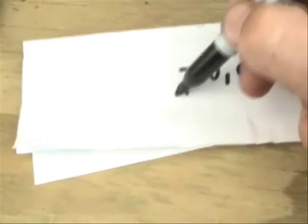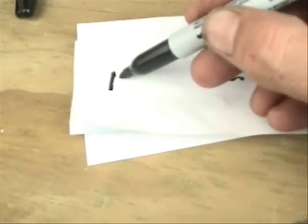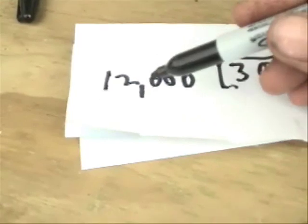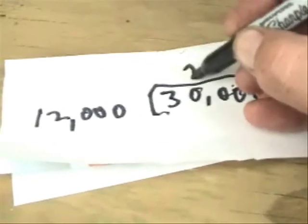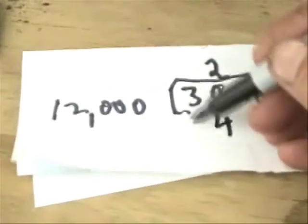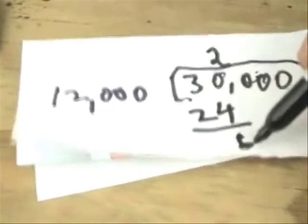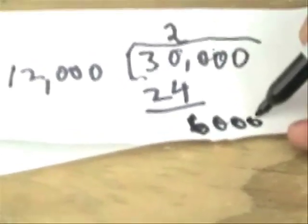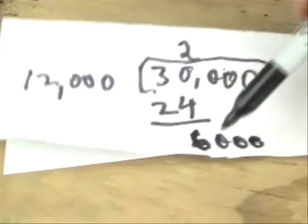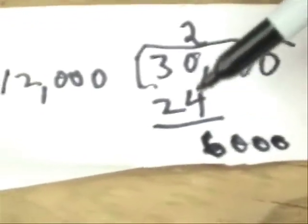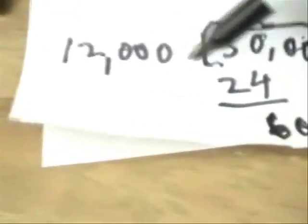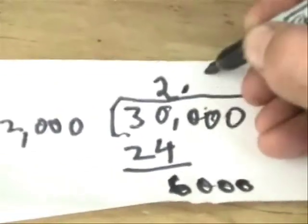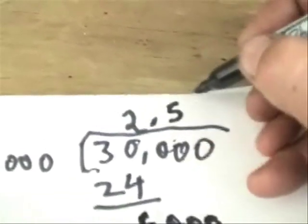What we have is a 30,000 BTU system, and we'll divide that by 12,000, because there are 12,000 BTUs to a ton. That's going to go at least 2 times. Our remainder is 6,000 BTUs — and 6,000 is half of 12,000 — so what we really have is a two-and-a-half ton air conditioning system.